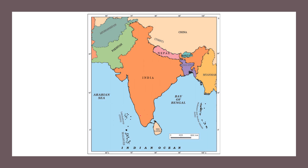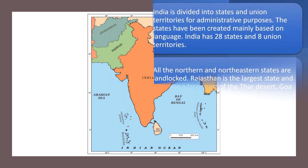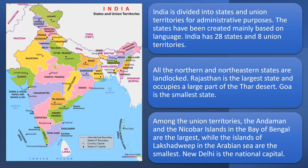To the south of the Lakshadweep Islands, we have another island country which is our neighbor, and that is Maldives. India is divided into states and union territories for administrative purposes. The states have been created mainly based on the language which the people speak. India has 28 states and 8 union territories.